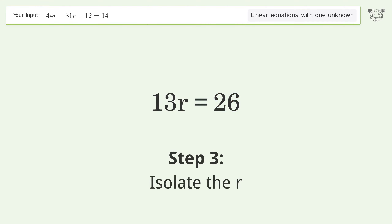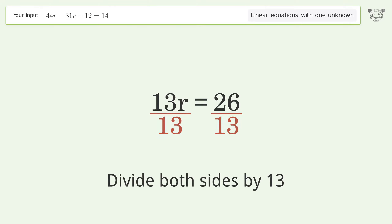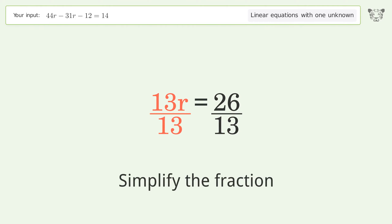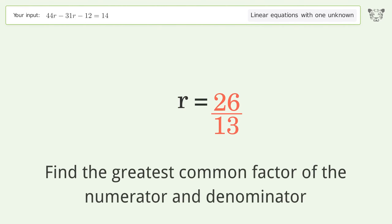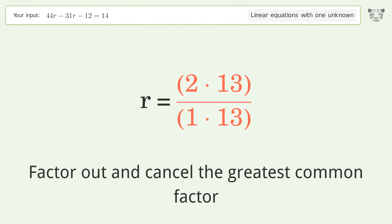Isolate the r by dividing both sides by 13. Simplify the fraction by finding the greatest common factor of the numerator and denominator, then factor out and cancel the greatest common factor.